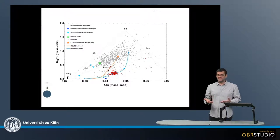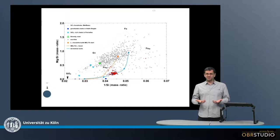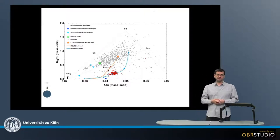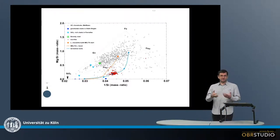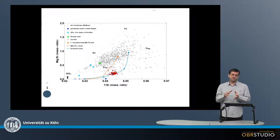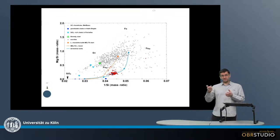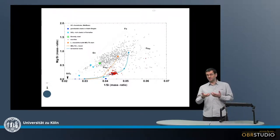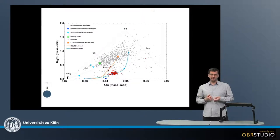Now if they are molten, one could expect that there is also some differentiation going on within this asteroid. If there is differentiation going on, then the chondrules forming from these differentiated melts or material should reflect this kind of differentiation.